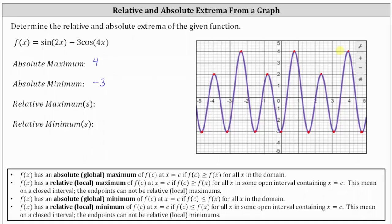These three highest points here do represent relative maximums. Notice how the graph changes from increasing to decreasing, and therefore the y value or function value of positive four is not only an absolute maximum, it's also a relative maximum. And then we have these three high points here that are not as high as the highest points, but they are high points in the interval around these points. The function changes from increasing to decreasing, and therefore the y value or function value of positive two is also a relative maximum.